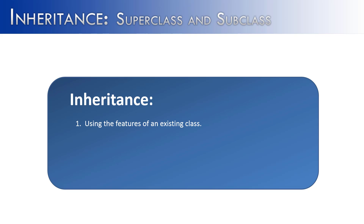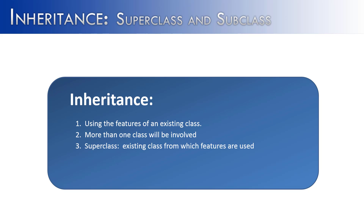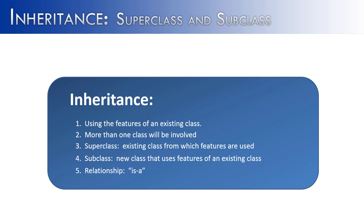So what is the idea of inheritance? It is using the features of an existing class — you like what the flying object does and you're going to use it in multiple different classes. When you have inheritance, more than one class will be involved. The super class is the existing class from which features are used, and the subclass is the new class that uses those features — you don't want to reinvent them. The relationship created between the super and subclass is an is-a relationship, meaning the subclass is what it is because it uses the super class's features.